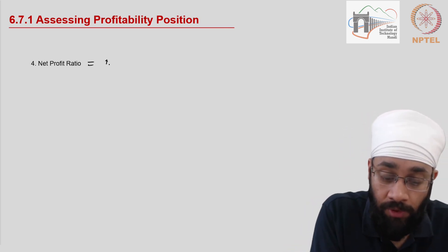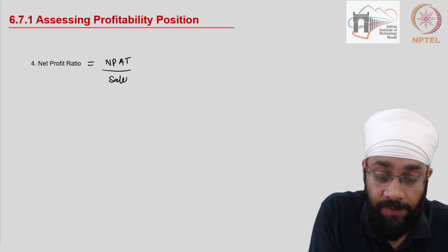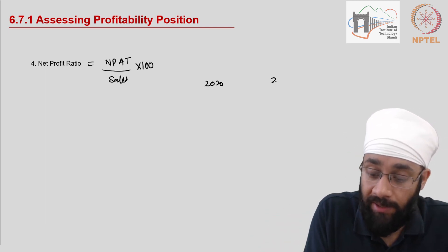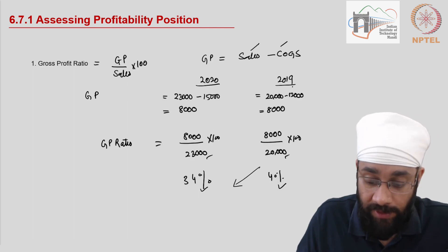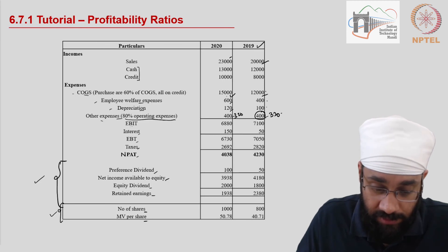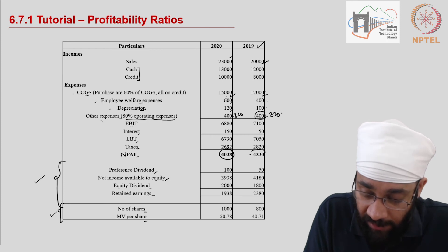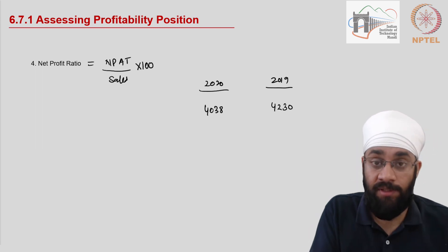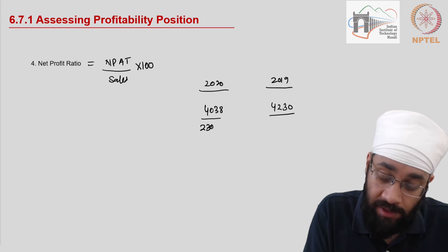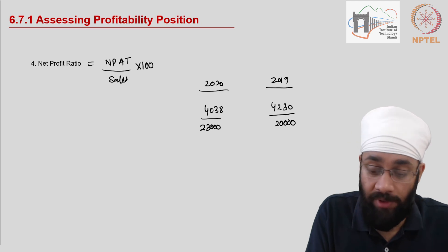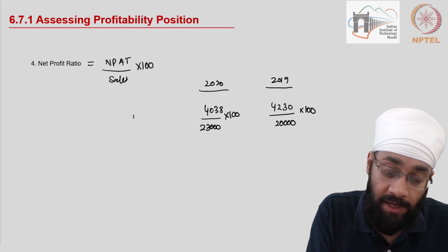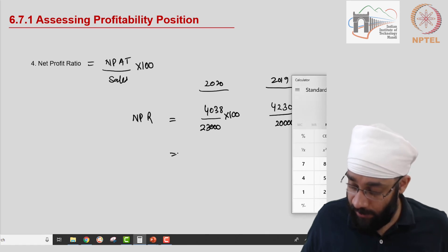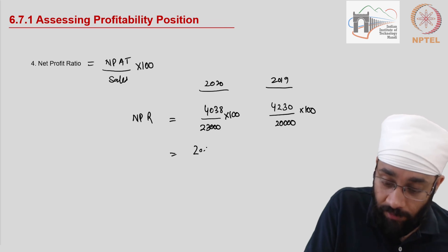Net Profit Ratio equals Net Profit After Taxes divided by Sales, multiplied by 100. From the income statement, net profit is 4,038 for 2020 and 4,230 for 2019. Sales are 23,000 and 20,000 respectively. Using the calculator: 4,038 / 23,000 and 4,230 / 20,000 gives the net profit ratios. For 2019: 4,230 / 20,000 = 20.19%.